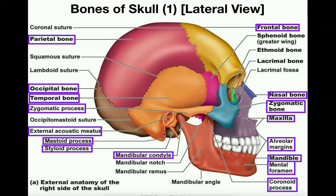Down below the temporal bone, this very spiky-looking thing that shoots downward and a little bit anteriorly is called the styloid process — we'll also see styloid processes on the radius and ulna. Moving back just inferior to that is the much larger bony extension coming off the temporal bone: the mastoid process. So the mastoid process is the larger one, and the styloid process is this very thin spike. Both have a left and a right.